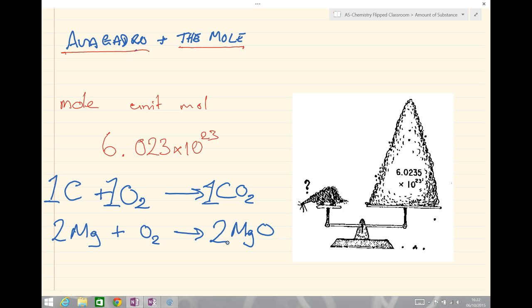This tells me if I had 2 moles of magnesium atoms, they would react with 1 mole of oxygen molecules and go to make 2 moles of magnesium oxide molecules. If we were to describe that in terms of actual numbers then it would be two lots of 6.023 times 10 to the 23 atoms of magnesium, one lot of 6.023 times 10 to the 23 molecules of oxygen going to make two times 6.023 times 10 to the 23 molecules of magnesium oxide.